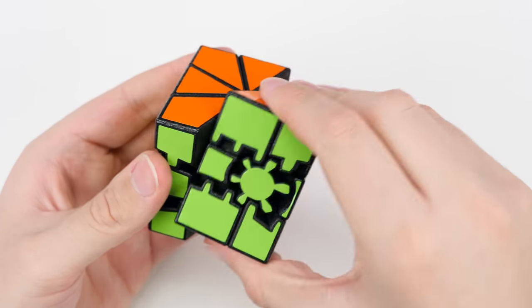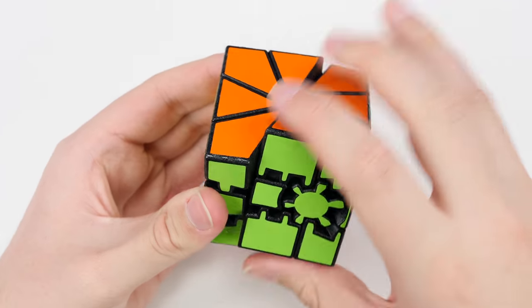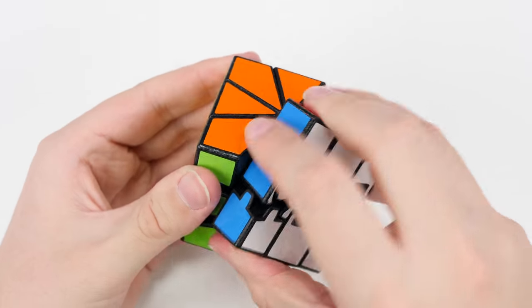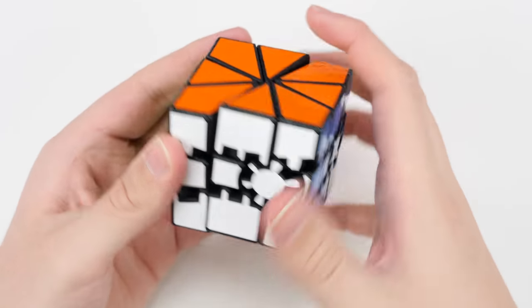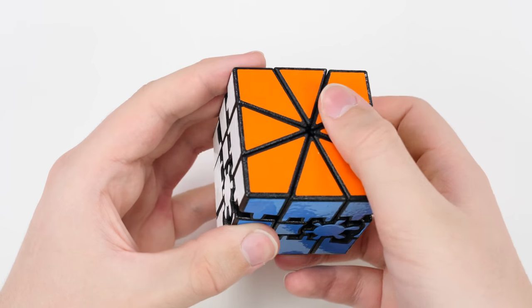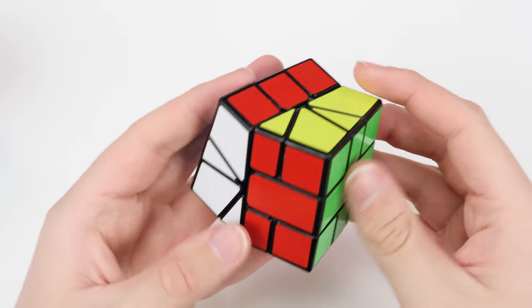So the puzzle moves like this like you would imagine a normal square one would. But it also moves on another angle so it also turns from this side as well. It actually moves from every side whereas the square one only has one slice turn.